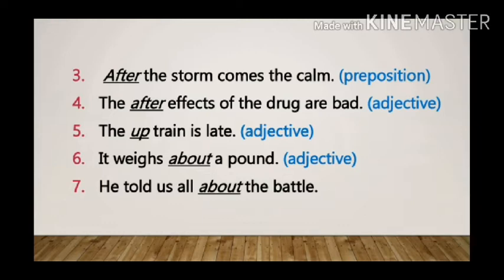Sentence 7: He told us all about the battle. Here 'about' is used as a preposition, which shows the relationship between 'battle' and 'he telling us all'.